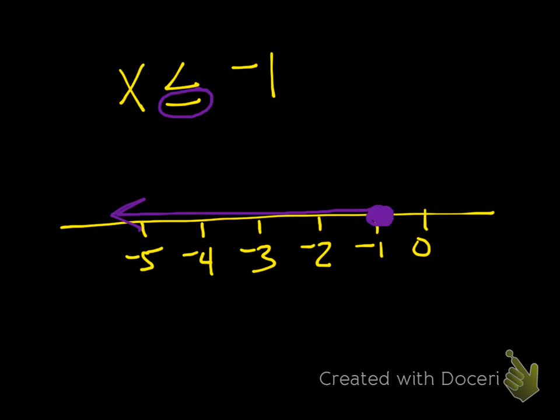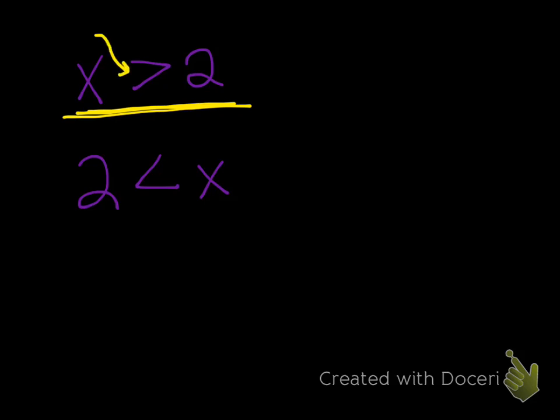All right, so just a couple more things. If you have x is greater than 2, that is the same thing as 2 is less than x. Because sometimes you're going to get it written in a different way. So I want you to notice, if you're looking at this problem right here, the big side, the open side of the inequality is facing towards the x. So when you flip it, it has to face towards the x here also. And then the small side faces towards the 2.